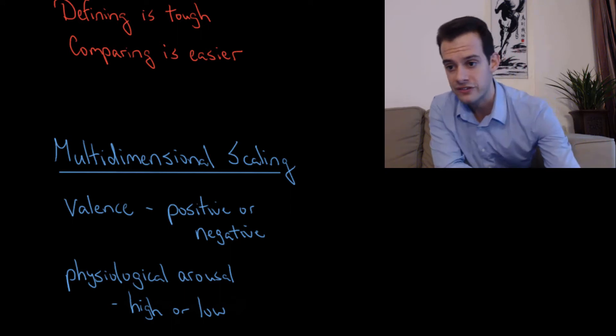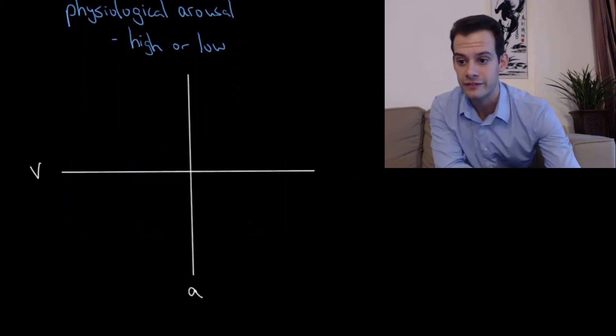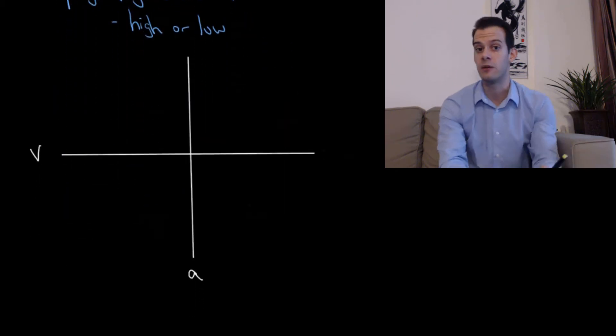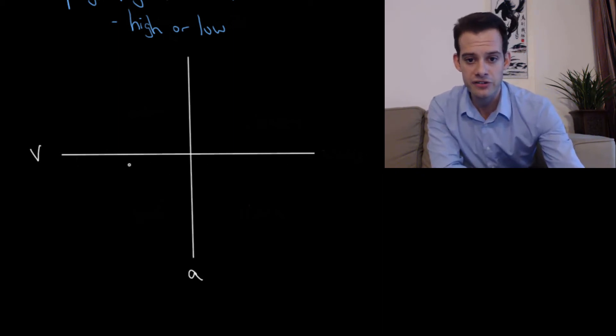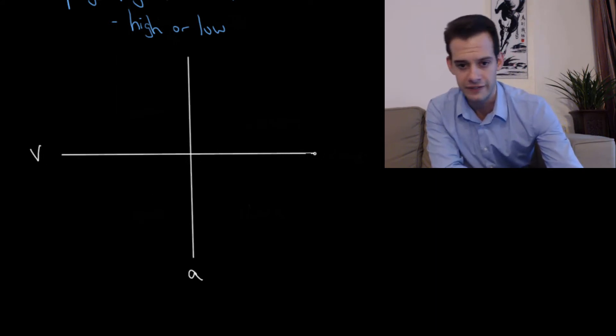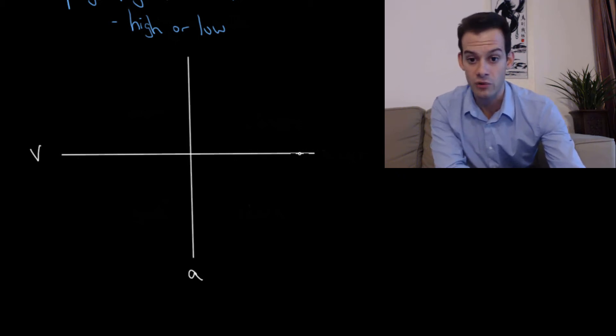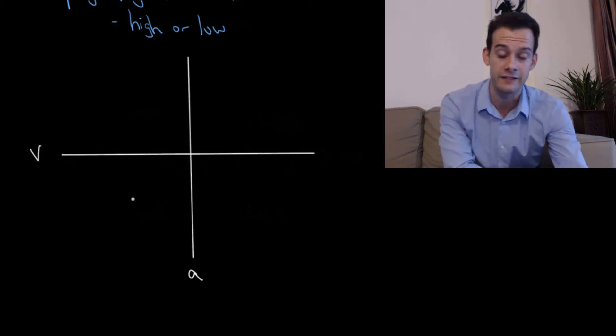Okay so with these two dimensions we can create sort of a graph or a map of emotional responses. So we can say okay here's the valence on the x-axis so anything to the left here would be a negative experience and anything to the right would be positive and you know the further away we get the more strongly positive or more strongly negative it is.